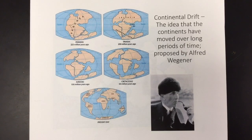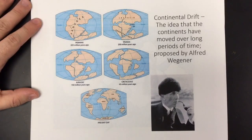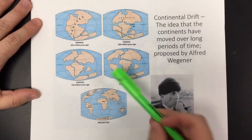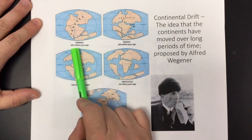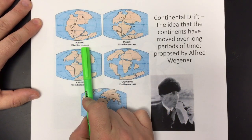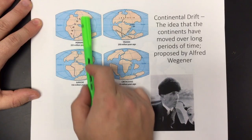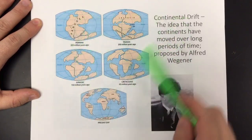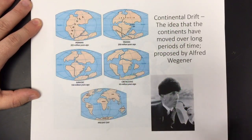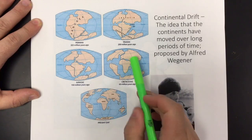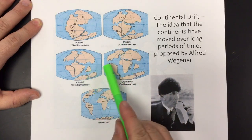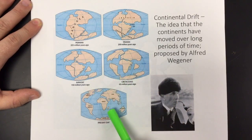Hi everybody, this is Mr. Claus and we're going to talk a little bit about continental drift. Continental drift is the idea that the continents have moved over long periods of time. Here in the Permian, 225 million years ago, all the continents were shoved together into one super continent that we call Pangaea. Over time they have started moving apart to looking kind of like the globe you see today.